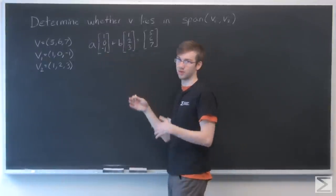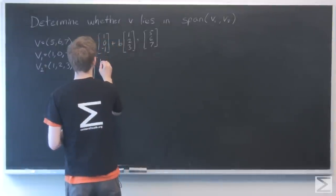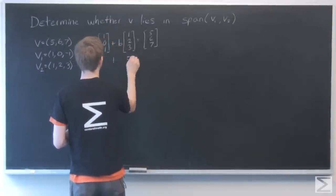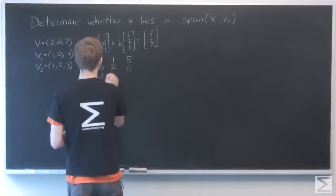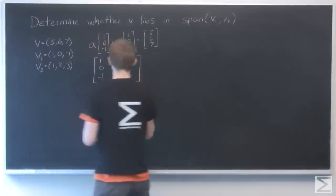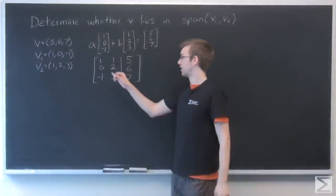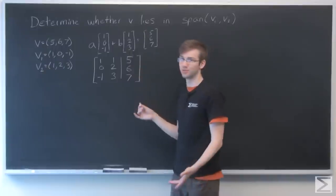So just dropping out these constants, I'm going to write it all as one matrix. We want to get this into REF form so we can have solutions for A and B.